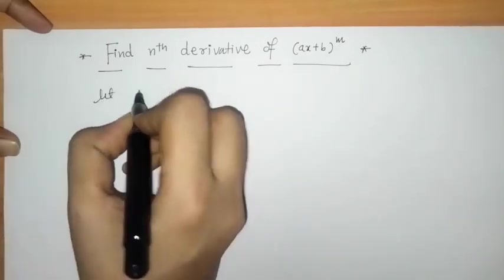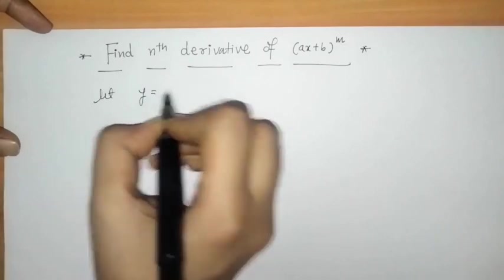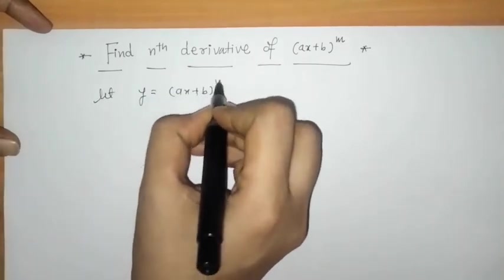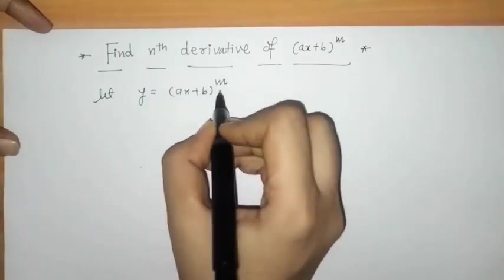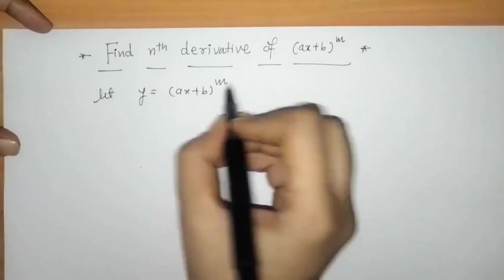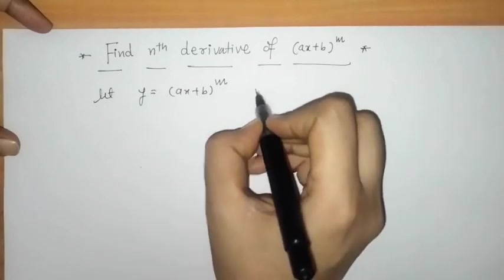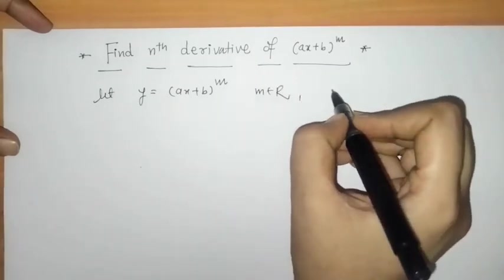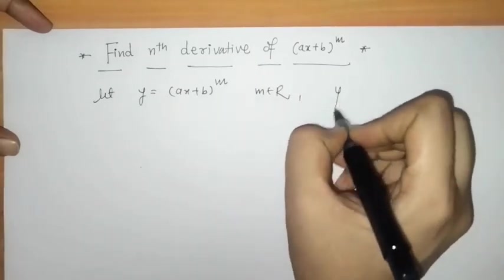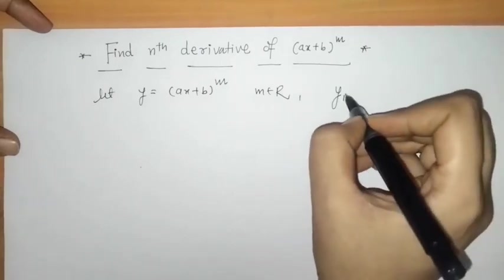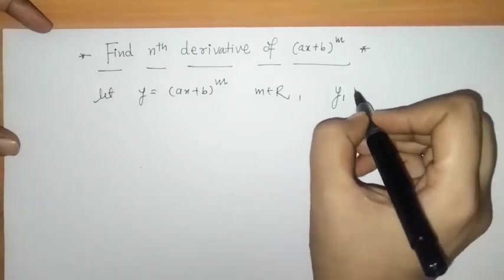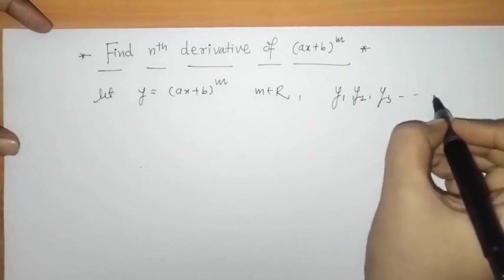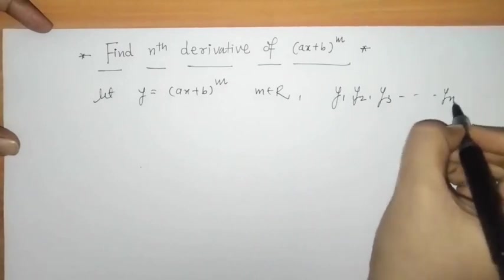Let's write here: y equals (ax + b) raised to m, where m is any real number. We have to find the nth derivative, meaning we first find y1, then y2, y3, up to yn.